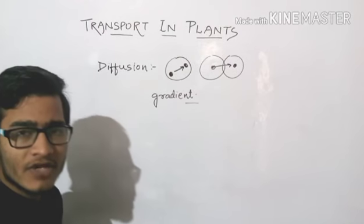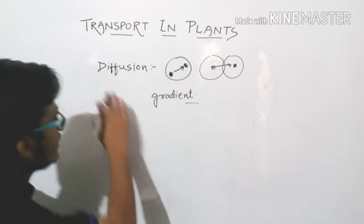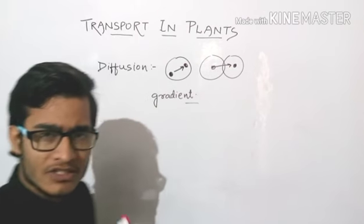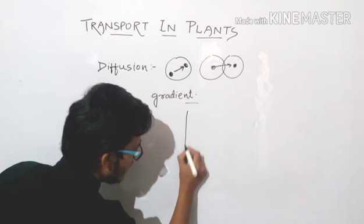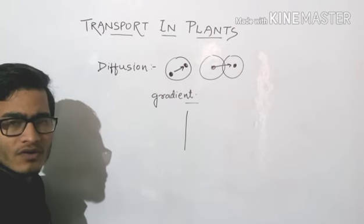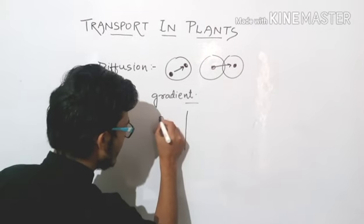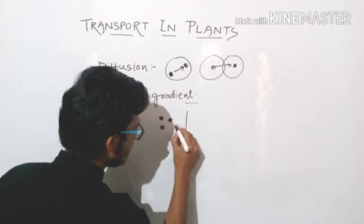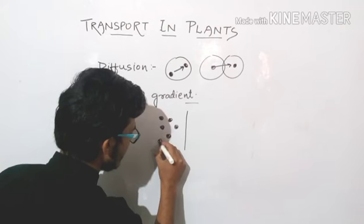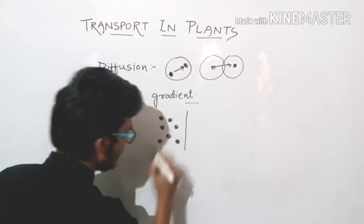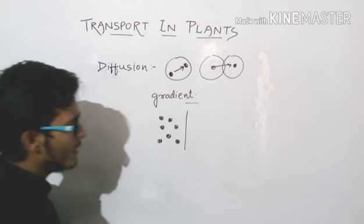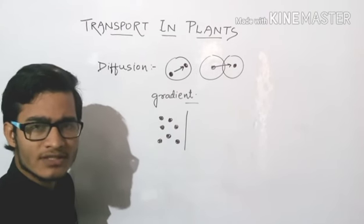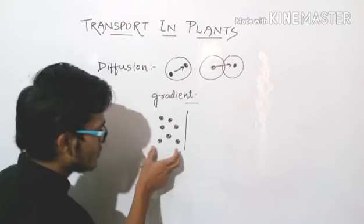We can call gradient as difference. In the case of diffusion, it is usually concentration gradient. The definition of diffusion is: the movement of particles from high concentration to low concentration is known as diffusion. A particular particle's motion from high concentration to low concentration is known as diffusion.